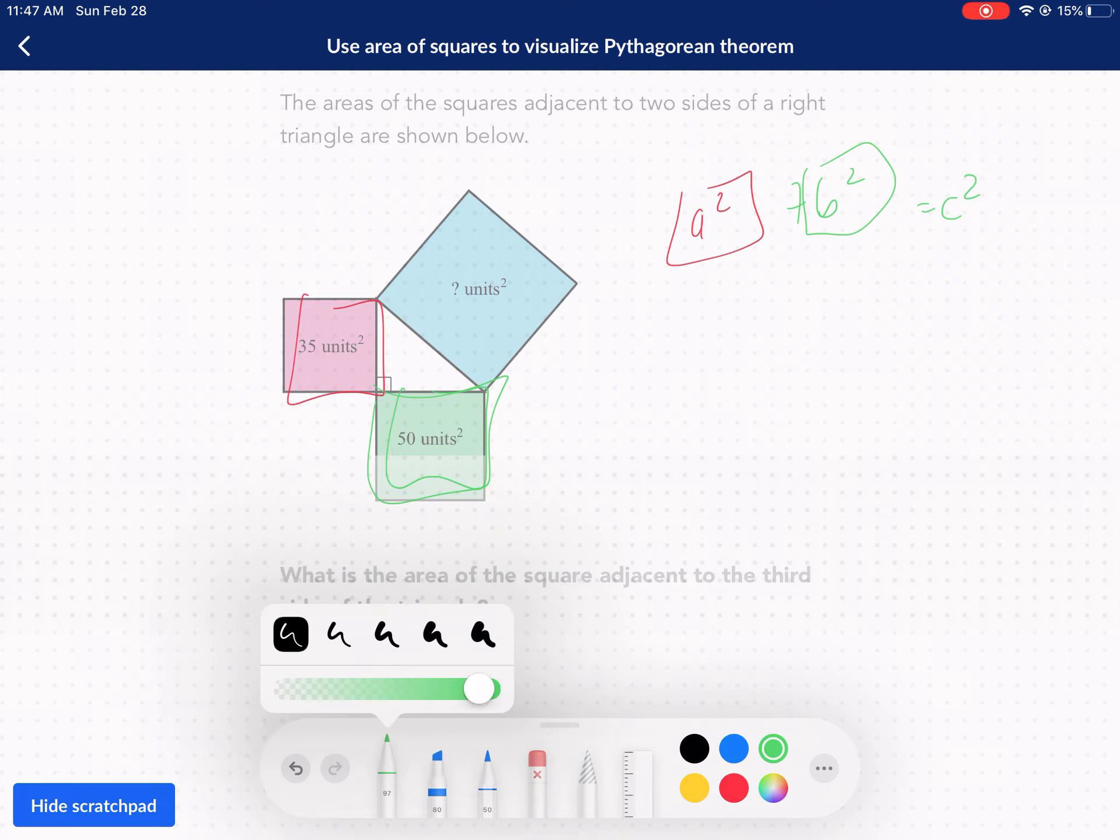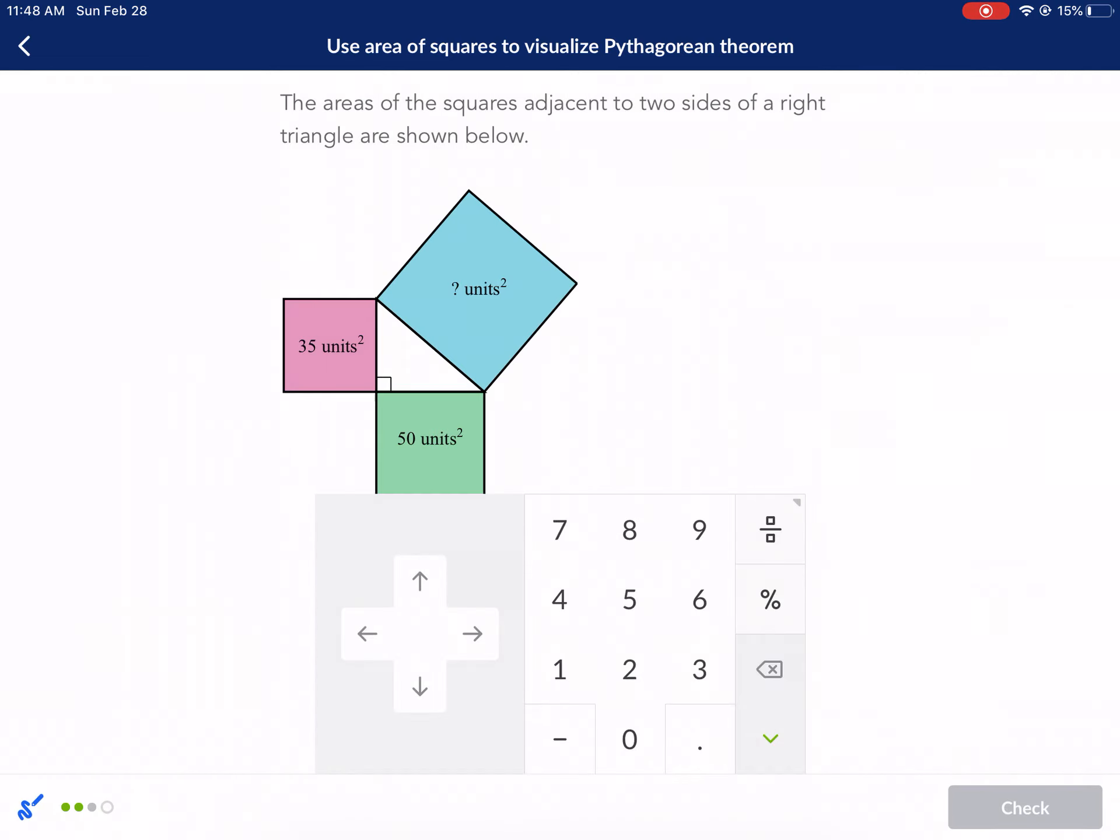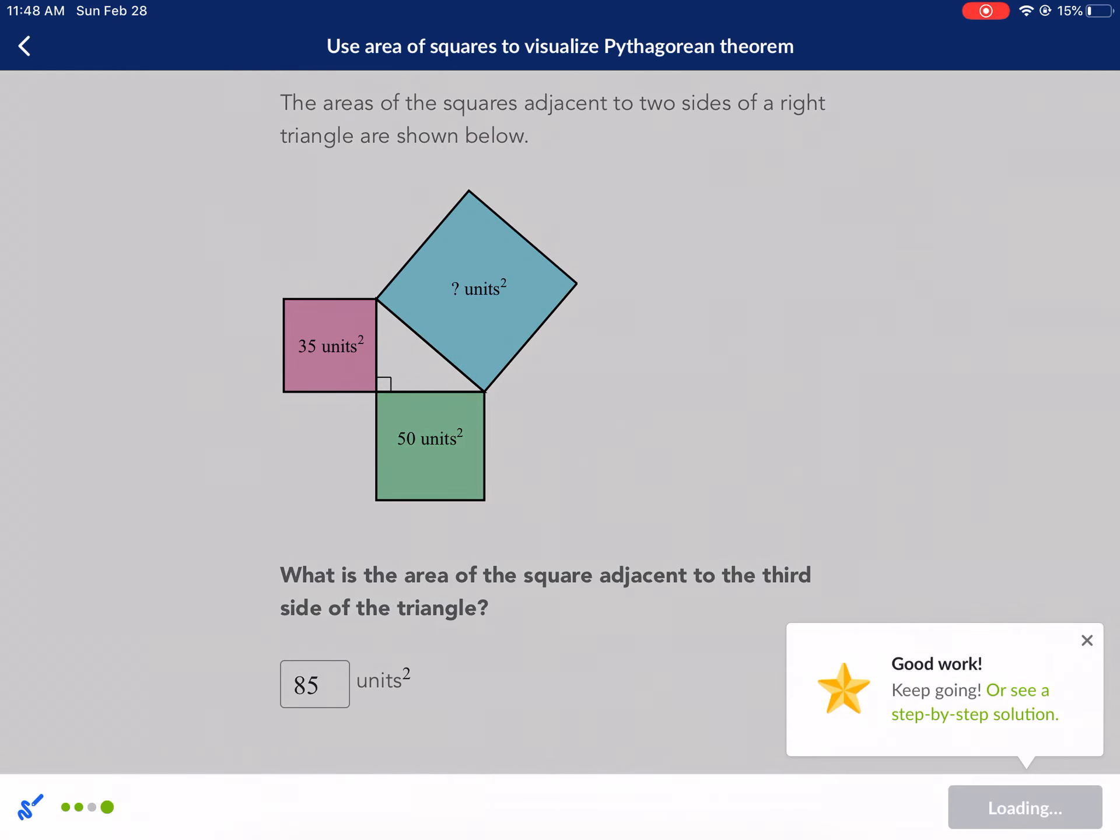We're just looking for C squared. So we just add 35 plus 50 and we get 85. And we're done.